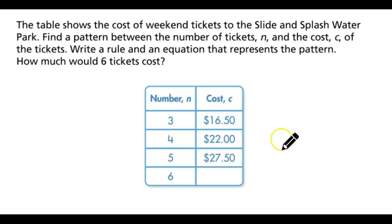Let's start finding the rule for this table. We need to find the cost of 6 tickets by finding the unit rate. To find the unit rate, we're going to divide 16.50 by 3. With that we get 5.50, and that 5.50 will be the cost of each ticket.